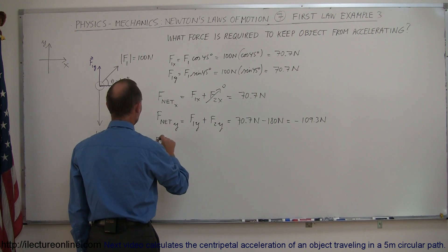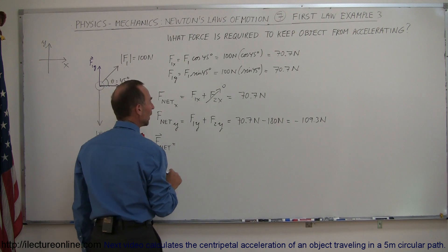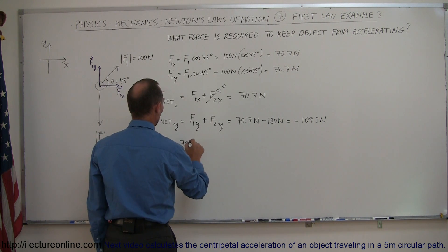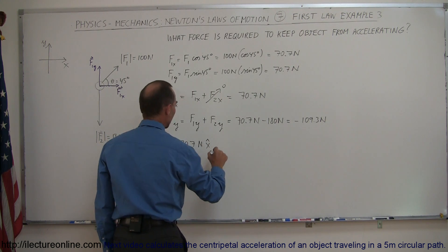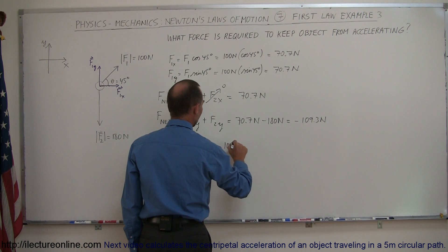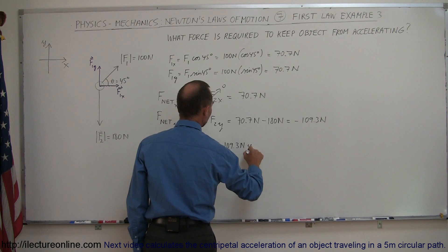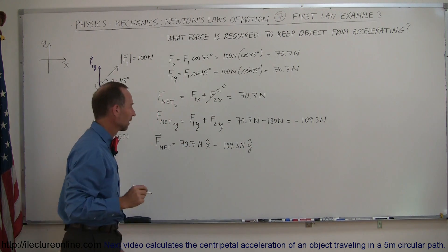So we can now write that F net is equal to 70.7 Newtons in the X direction, minus 109.3 Newtons in the Y direction.